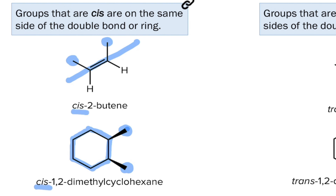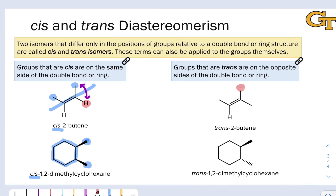We can convert each cis isomer to a trans isomer by exchanging the positions of the groups at one of those carbons. For example, if I exchange this hydrogen highlighted in red with this blue methyl group, I end up with trans-2-butene. Now if I divide the alkene in half by drawing a line through the double bond, the methyl groups are on opposite sides of that line. This is characteristic of a trans isomer.